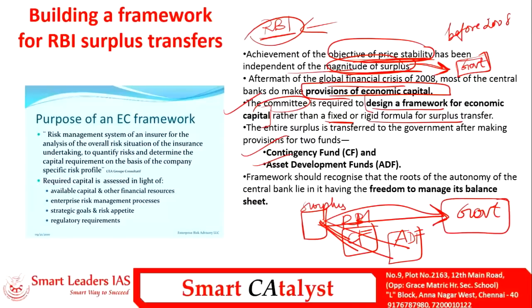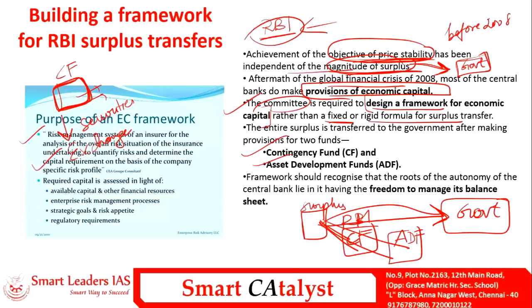The contingency fund is used in three scenarios: depreciation in the value of securities, exchange guarantees, and risks arising out of monetary or exchange rate policy operations. For example, if RBI sets the repo rate or reverse repo rate and any risk arises from that operation, only then can this contingency or emergency fund be utilized.